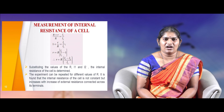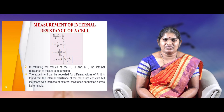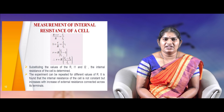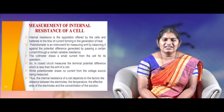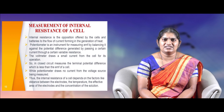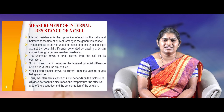By substituting the values of R, L1, and L2, we can determine the internal resistance of a cell. The experiment is repeated for different values of R, and it is found that the internal resistance of a cell is not constant — it increases with increasing external resistance connected across the terminals. Internal resistance is the opposition offered by a battery or cell to the flow of current, resulting in the generation of heat.